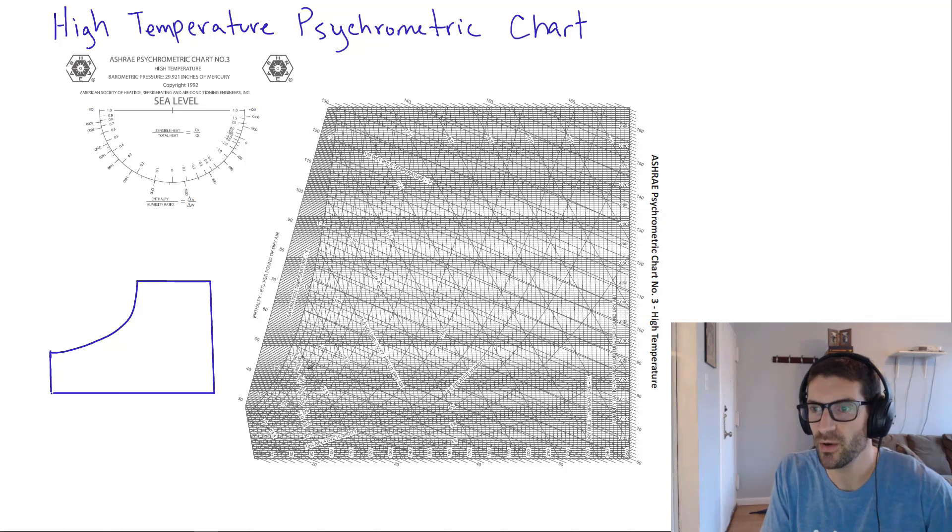But the main thing that I want you to know about the high temperature psychrometric chart is that it exists. So imagine you're being asked to find the humidity ratio along the vertical axis here, or the enthalpy or the wet bulb temperature or the dew point of air that's at some very high temperature, maybe 150 degrees or 200 degrees.